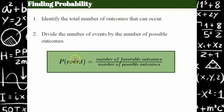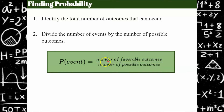So here's our ratio. Probability is a ratio. The probability of an event — for example, rolling a two — would have one favorable outcome because there's only one two, and six possible outcomes. So the probability of rolling a two is one out of six.